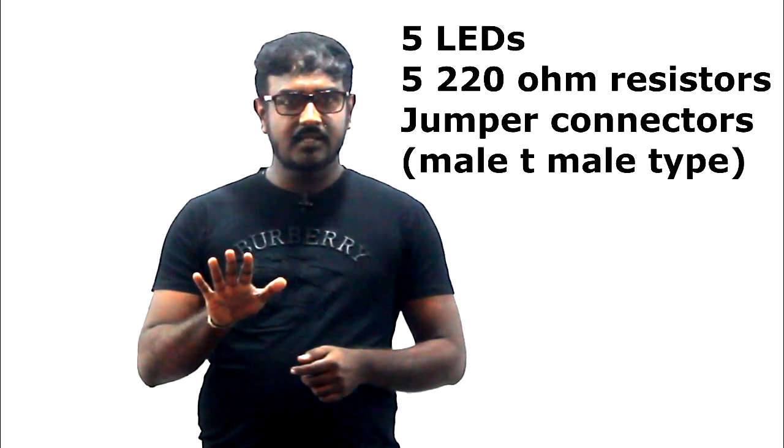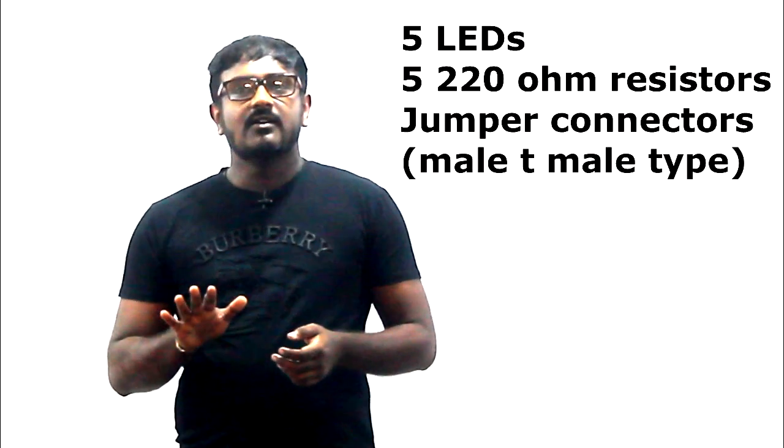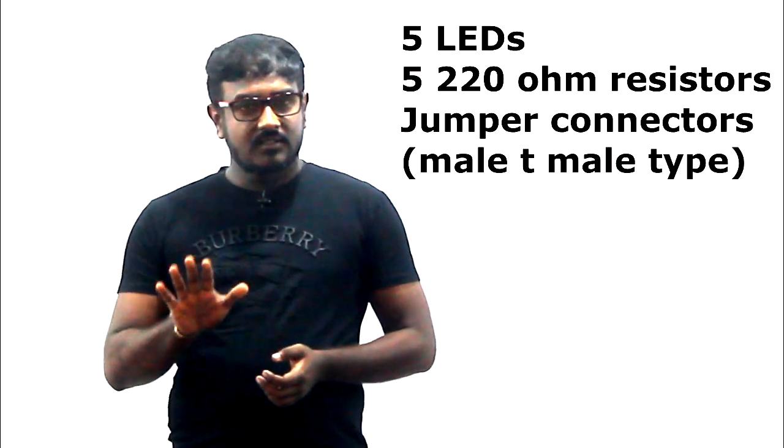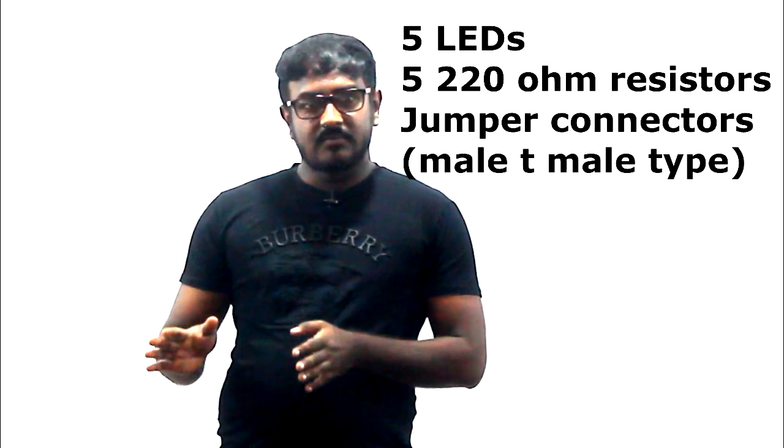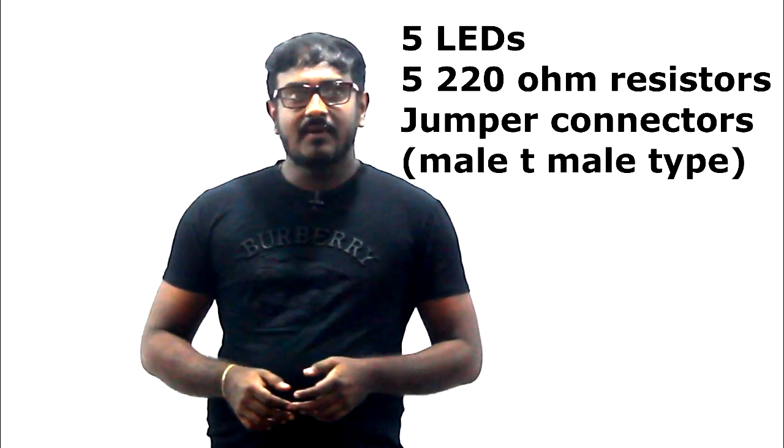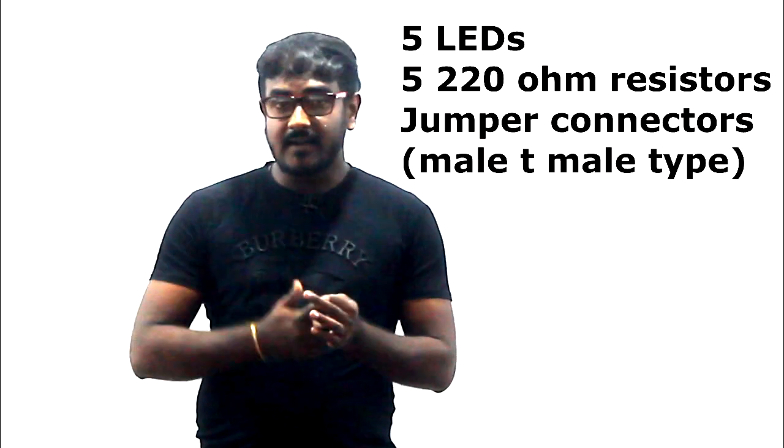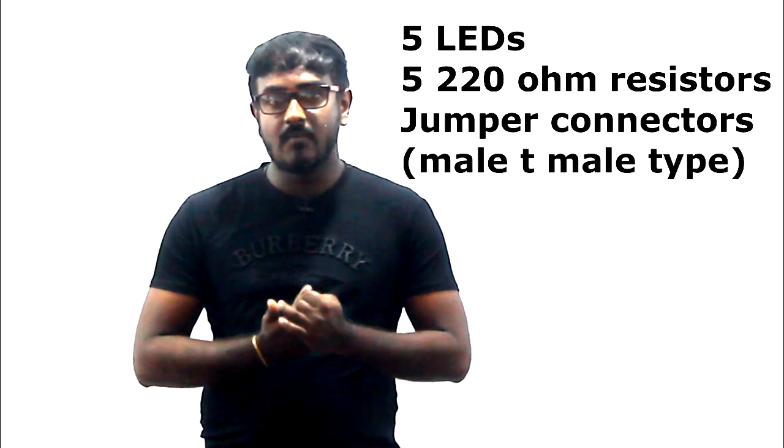In the next video we are going to discuss how to make a Knight Rider circuit - like the LED panel on KITT where the light travels across. We are going to make that pattern with the same program we did today with some little improvements. For that you will need five LEDs in your desired color - I prefer red - plus five 220-ohm resistors, plus about ten jumper wires. Prepare those things and let's meet in the next video very soon. Bye!